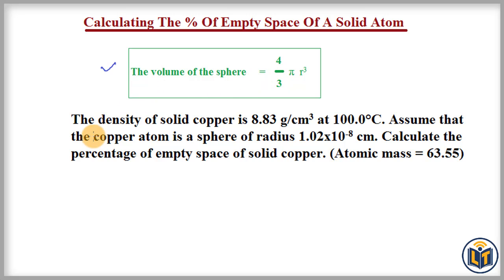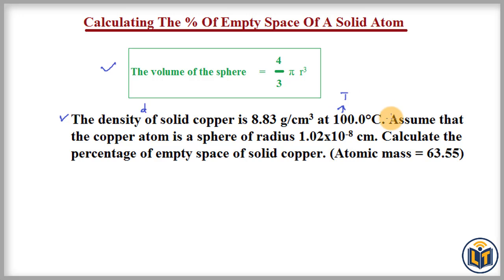I will show you how to calculate the percentage of empty space in solid atoms by solving a problem. The problem states that the density of solid copper is 8.83 gram per centimeter cube at 100.0 degrees Celsius. The copper atom is assumed to be a sphere of radius 1.02 × 10⁻⁸ centimeters.